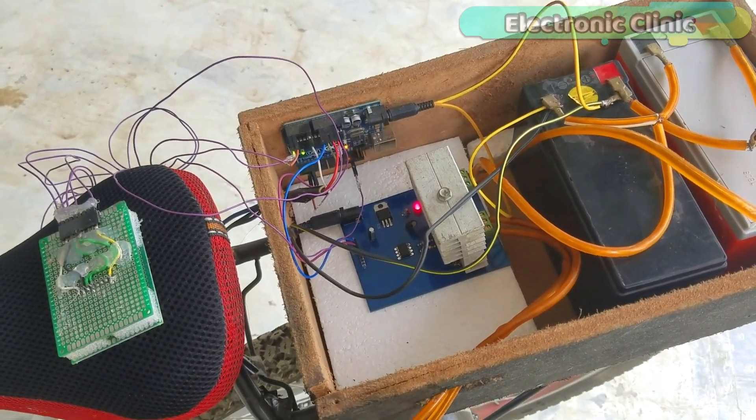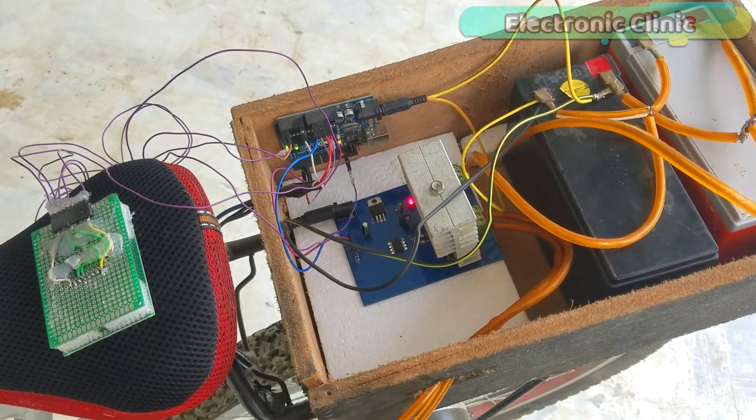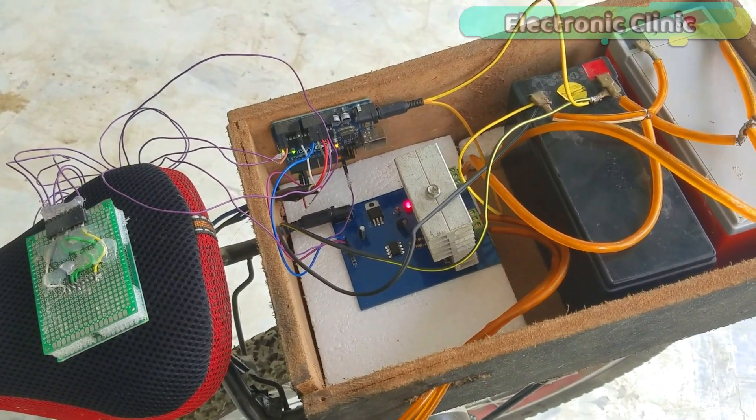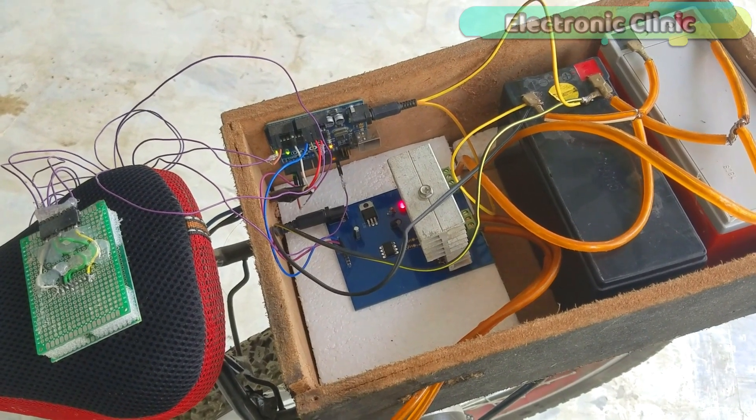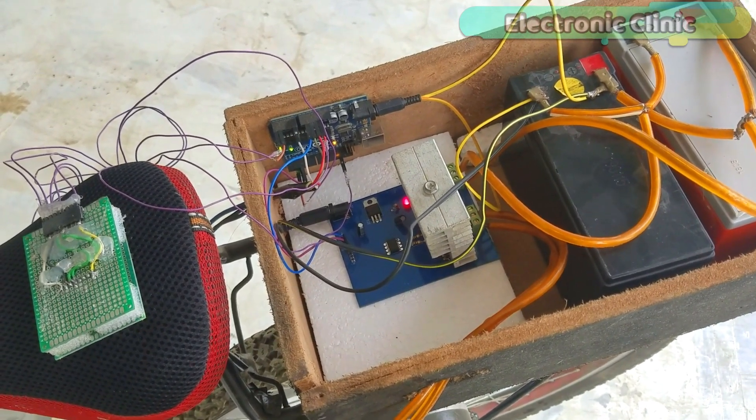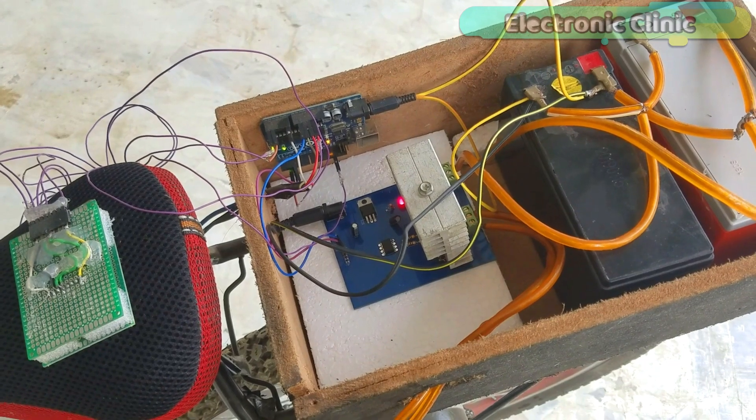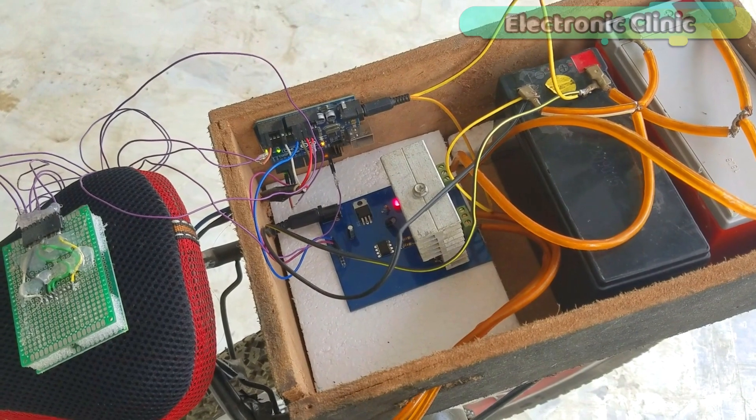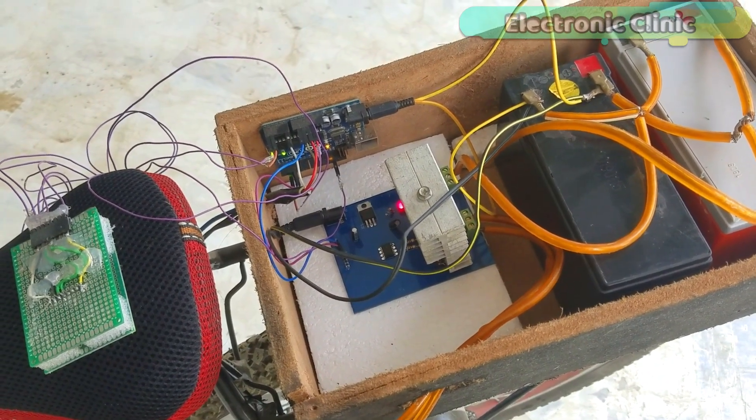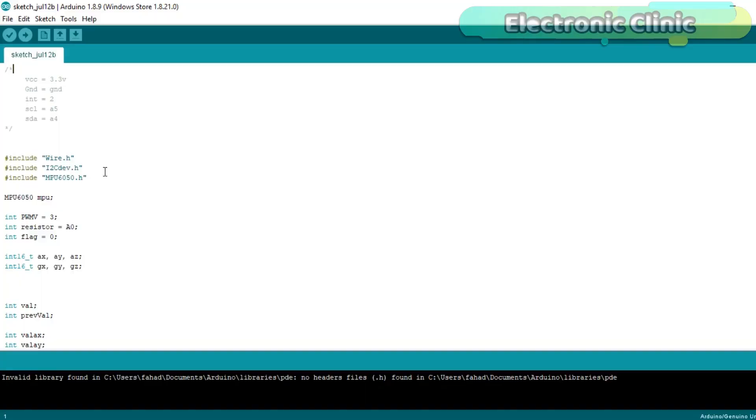This time I only added the MPU6050 module. The VCC of the MPU6050 module is connected with the Arduino's 3.3 volts. The ground is connected with the ground, while the SDA and SCL pins of the MPU6050 module are connected with the Arduino's A4 and A5 pins as per the circuit diagram already explained.